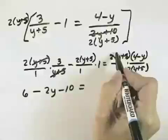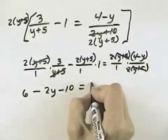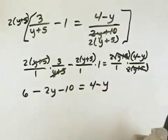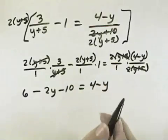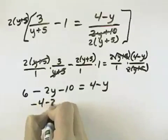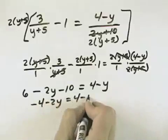Equals, here the 2 cancels and the y plus 5 cancels, leaving 4 minus y. So this is what we're going to solve for y. 6 minus 10 is negative 4 minus 2y, equals 4 minus y.